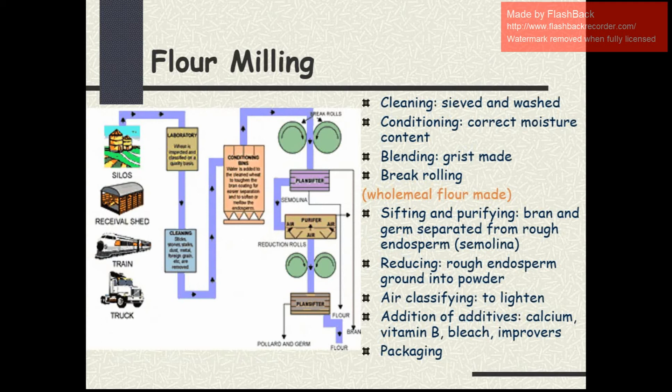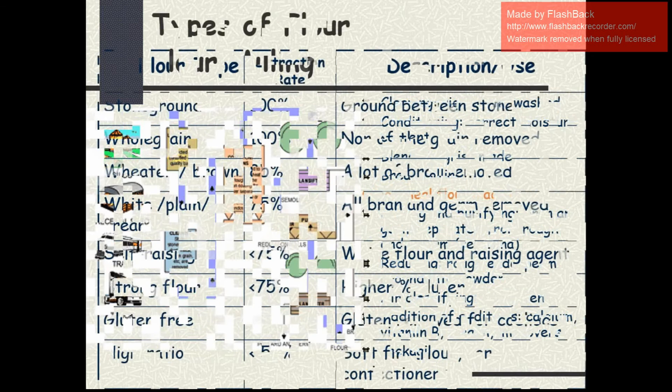Next is sifting and purifying, where the bran and germ are separated from the rough endosperm. The end product is called semolina. Next is particle reduction, where the rough endosperm is ground into powder. Next is air classifying to lighten the flour. Next is the addition of additives — we can add calcium, vitamin B, bleach or some improvers. After that, the finished product is packaged.